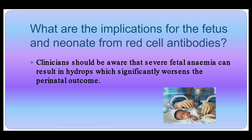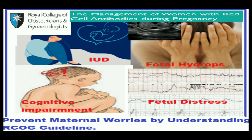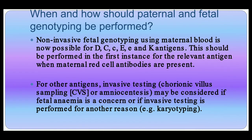Clinicians should be aware that severe fetal anemia can result in hydrops, which significantly worsens perinatal outcome. The implications include intrauterine death, fetal hydrops, cognitive impairment, and fetal distress. We need a thorough understanding of the RCOG guideline in order to prevent mothers and fetuses from suffering these complications.